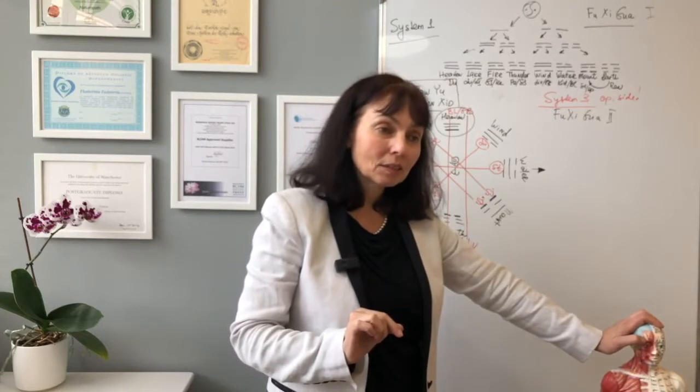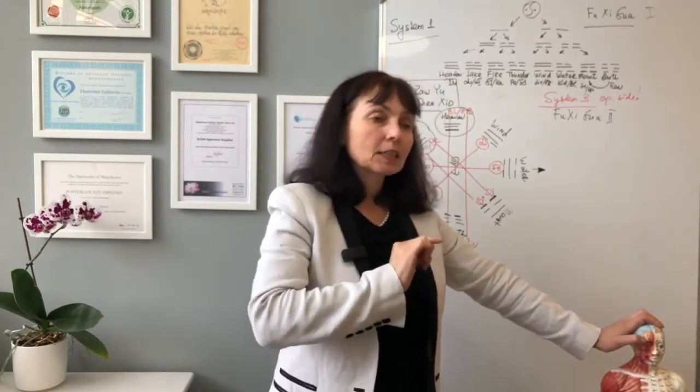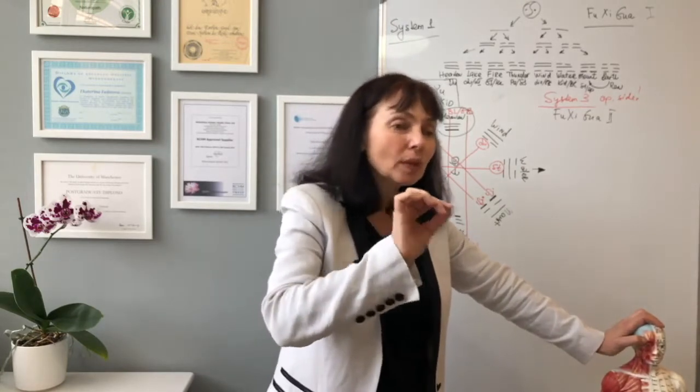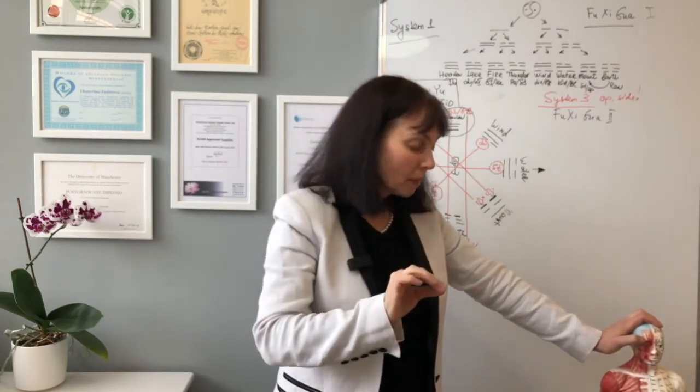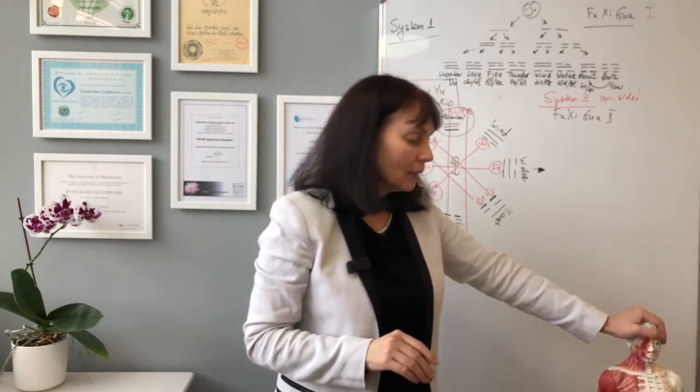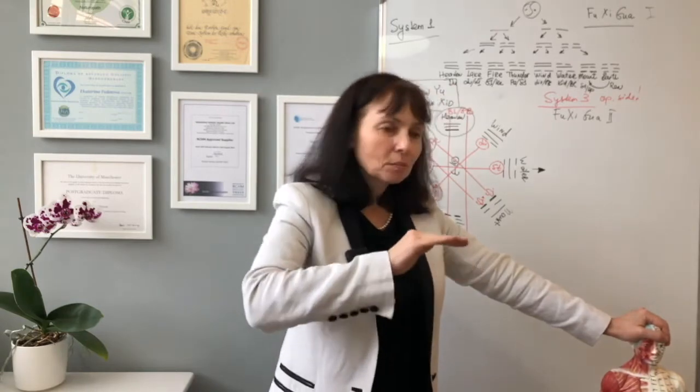If the pain is along the tendons, we choose the meridians that go through the tendons and touch the tendon with the needle. If the pain is on the skin, we must needle subcutaneously — don't go deep. Bone for bone, tendon for tendon. Superficial levels must be needled superficially, and this is very important.